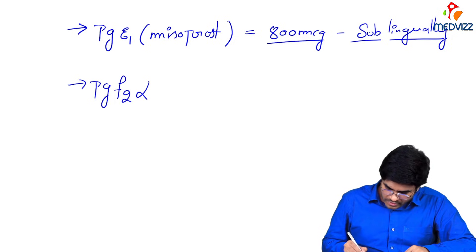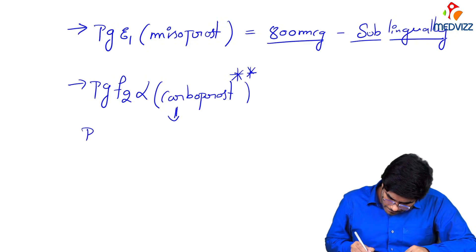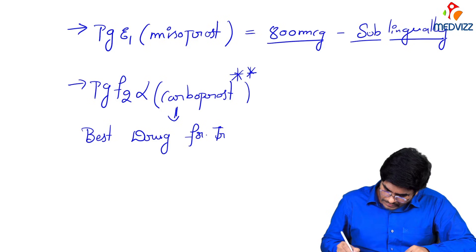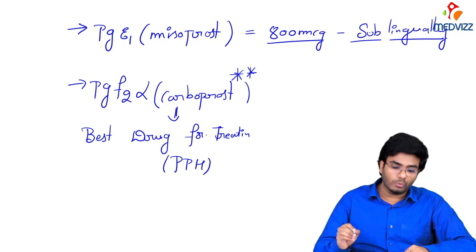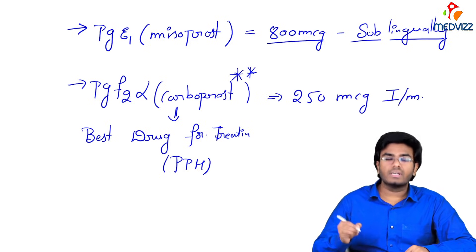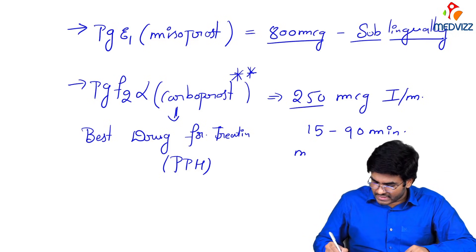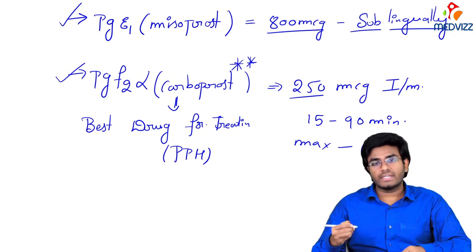Other prostaglandins include prostaglandin F2-alpha, known as carboprost. This is a very important drug — carboprost is the best drug for treating postpartum hemorrhage. How much to give: 250 micrograms intramuscular, repeated every 15 to 19 minutes, with a maximum of 8 doses. So the prostaglandins we use are PGE1 (misoprostol) and PGF2-alpha (carboprost).